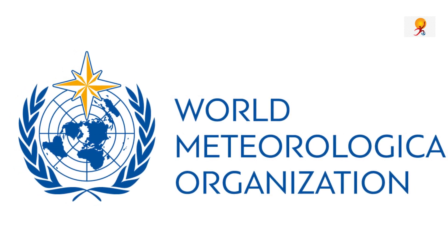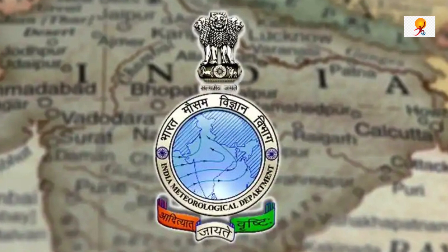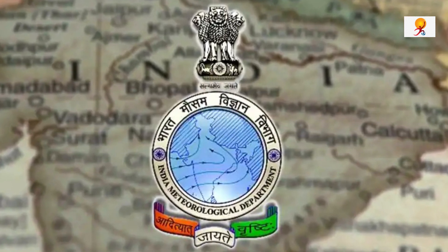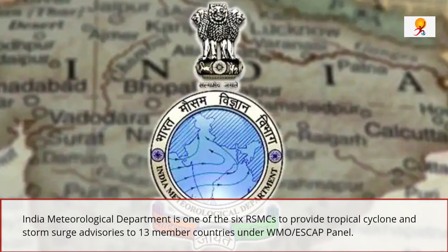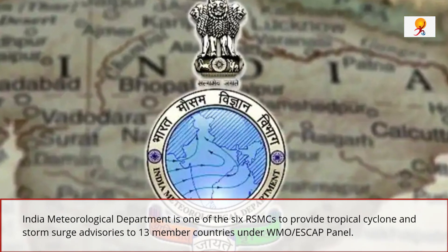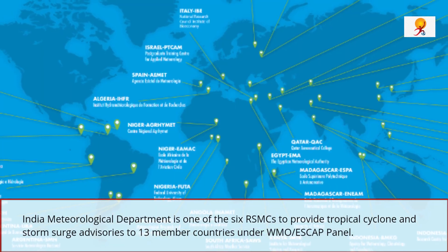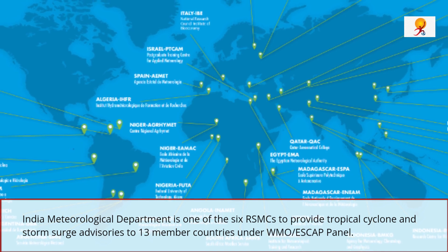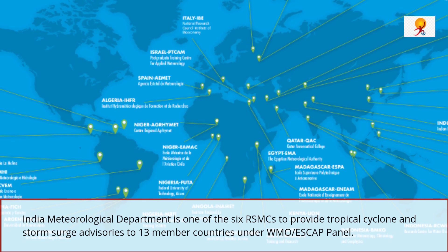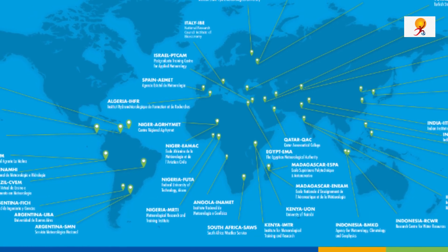Tropical cyclones forming over different ocean basins are named by their concerned Regional Specialized Meteorological Center. The Indian Meteorological Department is also one of the six Regional Specialized Meteorological Centers, providing tropical cyclone and storm surge advisories to 13 member panel countries under the World Meteorological Organization panel.